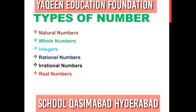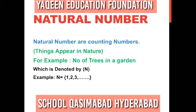Today we will learn types of numbers. What are types of numbers? Natural number, whole number, integers, rational number, irrational number, and real number.